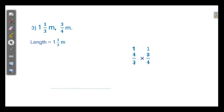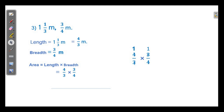Third one: length is equal to 1 1 by 3 meter, breadth is equal to 3 by 4 meter. Area is equal to length into breadth. 1 1 by 3 is the same as 4 by 3. So, 4 by 3 into 3 by 4. We can cancel: 4 and 4 give 1, 3 and 3 give 1. So, 1 into 1 is 1. The answer is 1 square meter. Thank you. Bye.